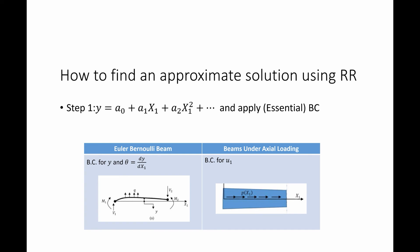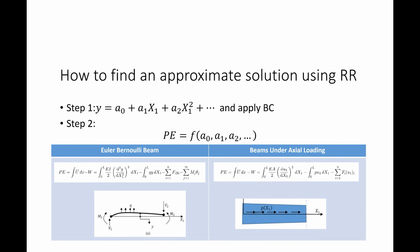The essential boundary conditions for stability are different for the two beam types. For the Euler-Bernoulli beam the boundary conditions that need to be satisfied are those for the displacement and the rotation. For beams under axial loading they are the boundary conditions for the horizontal displacement only. The second step is to write the potential energy of the system as a function of the unknown coefficients in the displacement, using the respective potential energy equations studied previously.